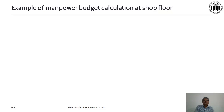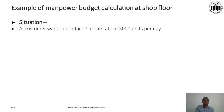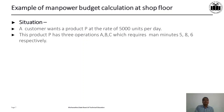Now we will simply try to understand how we calculate a budget at the shop floor, which is important for you to understand. Consider a situation where a customer wants product P at the rate of 5000 units per day. This product P has three operations — A, B, and C — and the time required, or the man-minutes required, for each operation is 5, 8, and 6 minutes respectively.